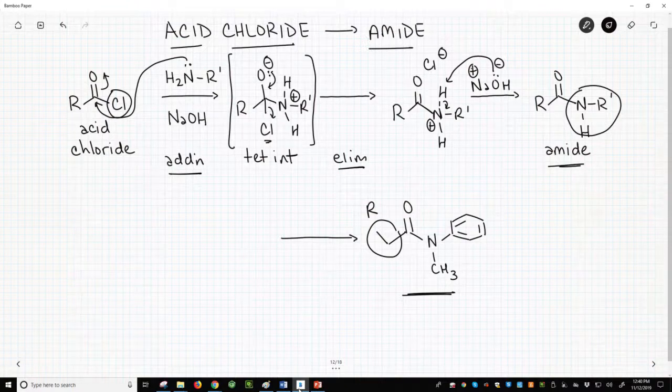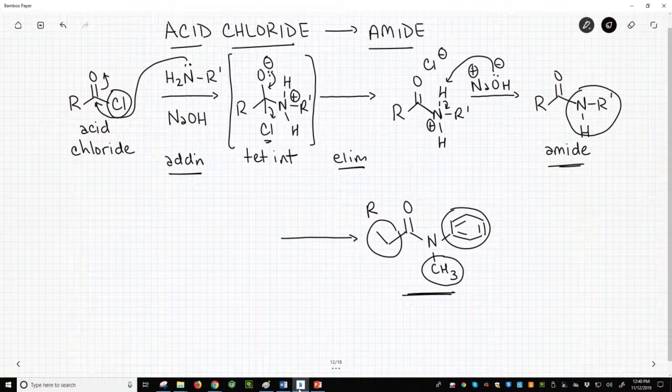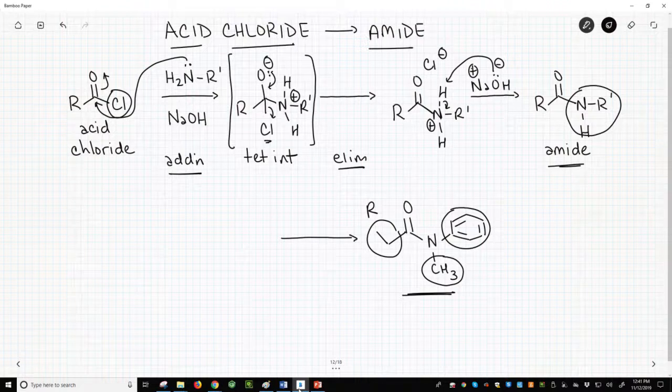The nitrogen in the amide has two carbon groups off of it, ignoring the carbonyl carbon. So the amine will also need two carbon groups. So let's draw our amine, our nitrogen, with two carbon groups, phenyl and methyl.